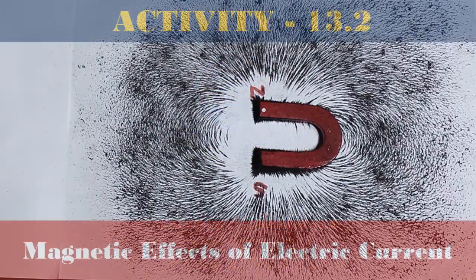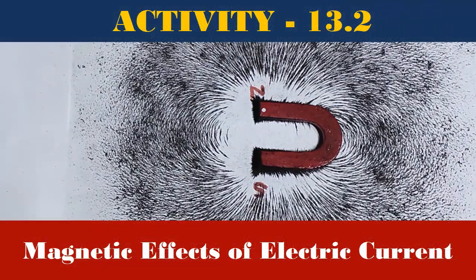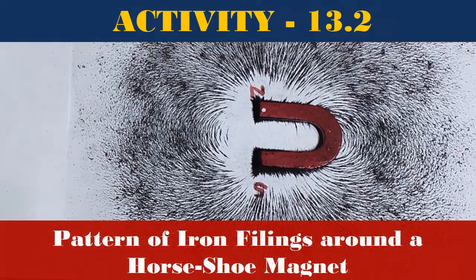In this video, we will see an extension of the activity 13.2 of the chapter Magnetic effects of electric current, that is, the pattern of iron filings around a horseshoe magnet.